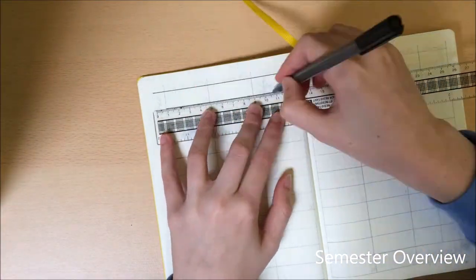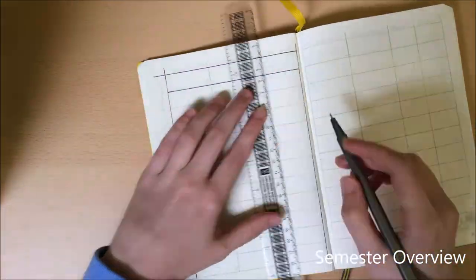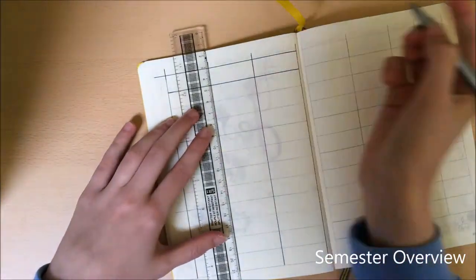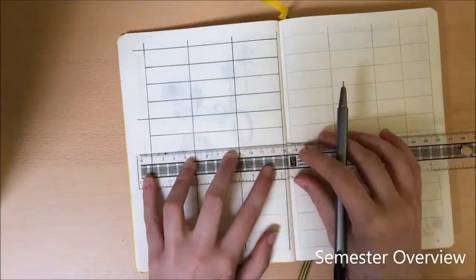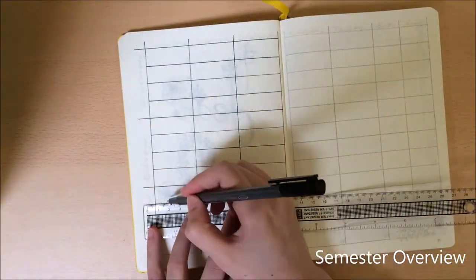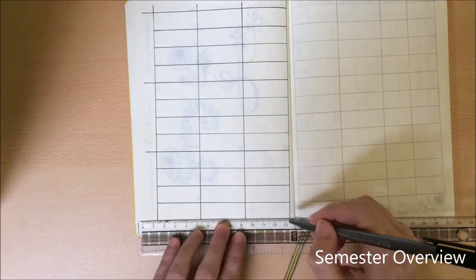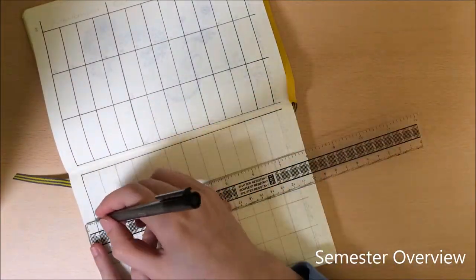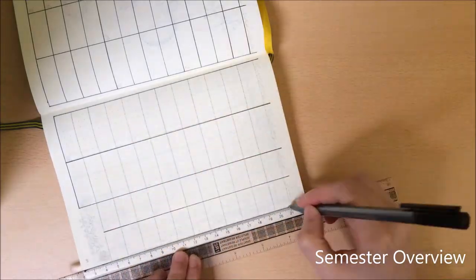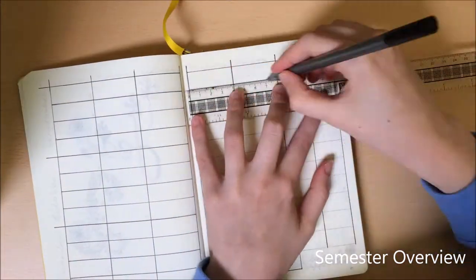Next I have my semester overview. I find it a lot easier to see what's due and what exams and assignments I have to do when I have everything on one or two pages. My semester usually lasts about three months so this is going to fit September, November and December on these two pages.